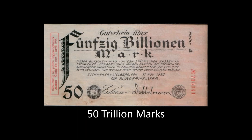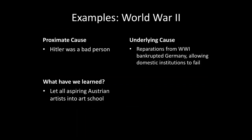Inflation got so bad that Germany actually printed 50 trillion mark notes. If we focus on the proximate cause, the lesson is that we should let all aspiring Austrian artists into art school so we won't end up with people like Hitler in power. In contrast, if we focus on the underlying cause — allowing domestic institutions to fail and giving someone like Hitler the opportunity to rise to power — the lesson is that we should be magnanimous in victory. This concern was part of the impetus behind the Marshall Plan, where the United States extended great international aid to West Germany to rebuild the country.